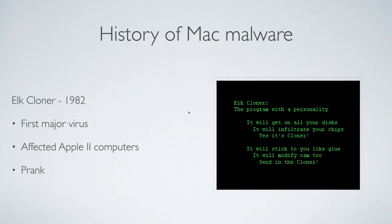First, let's go through a brief history of Mac malware before talking about what we're seeing today. Some of you will be looking at the date 1982 and say this isn't Mac malware, which is technically true. But this piece of malware — Elk Cloner — was the first major virus to really spread widely. Contrary to what most people think, it affected Apple II computers, not PCs. A lot of people have the conception that viruses began on the PC, but that's actually not true — they began in part on Apple hardware.